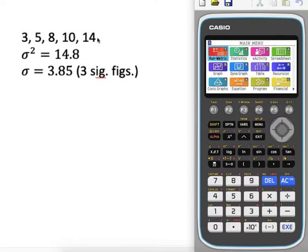It's slightly different from what Jack Brown was talking about, but here are his numbers. He got a variance of 14.8 and a standard deviation of 3.85, so we should get the same. First, go to the statistics option.